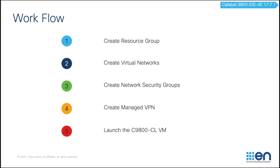Now let's talk about the workflow and then go into Azure portal to build up the deployment. First, we are going to create a resource group. Second, we are going to create virtual networks. After that, we are going to create a network security group. Then we are going to create a managed VPN. Finally, we are going to launch the C9800 CL virtual machine.